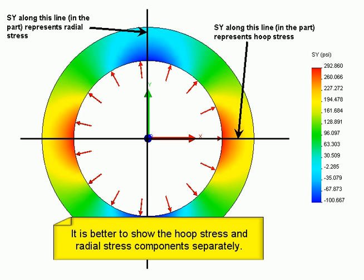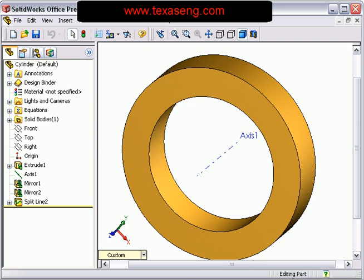It is better to utilize the natural coordinates of the structure to show the hoop stress and radial stress components separately. To do this, you can reference an axis down the center of the cylindrical shape when you plot the result component.